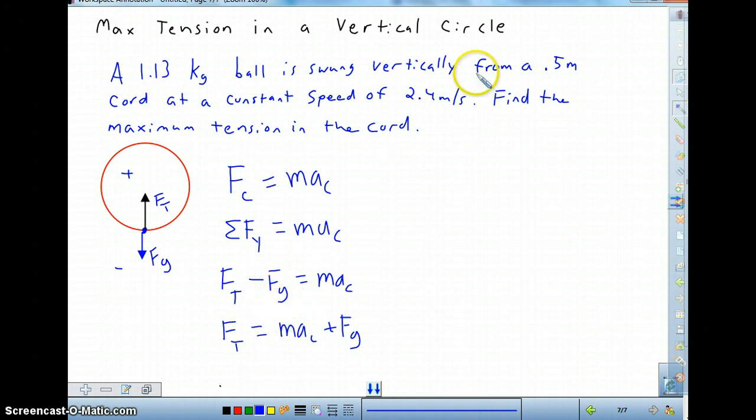We know the mass, we know the chord has a radius of 0.5 meters at a constant speed of 2.4 meters per second. And so from that, I could directly find the centripetal acceleration with v squared over r. And that will be 0.5 squared divided by 2.4.